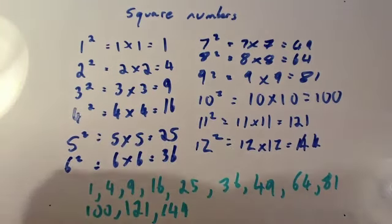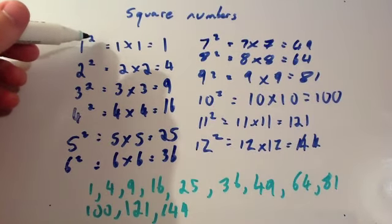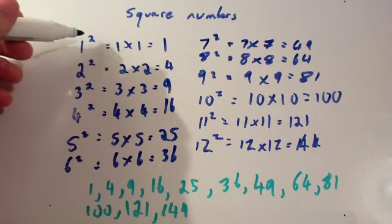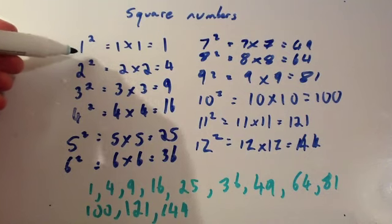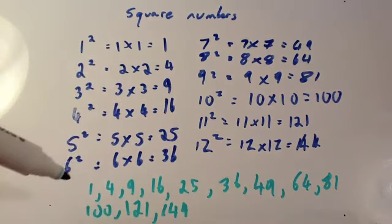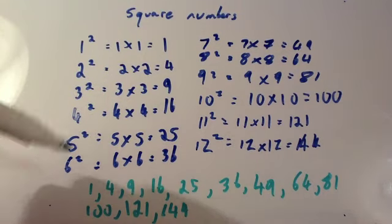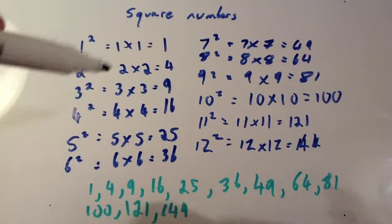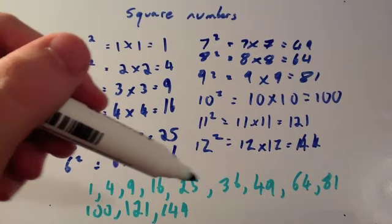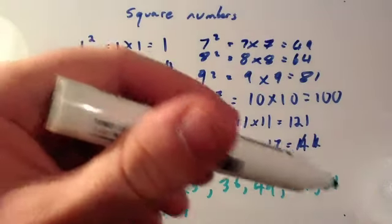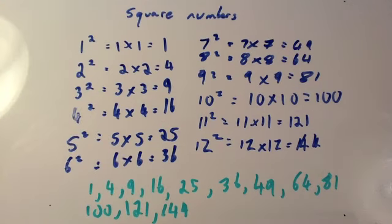To summarize: a square number is what you get when you multiply a number by itself. This little superscript 2 is the square symbol — if you see any number with this little 2 above it, it means you're to square it, which means multiply that number by itself. The square numbers are what you get whenever you square all the integers — remember, integers are whole numbers. The answers are 1, 4, 9, 16, 25, 36, 49, 64, 81, 100, 121, 144. It's useful to learn as many as you can.